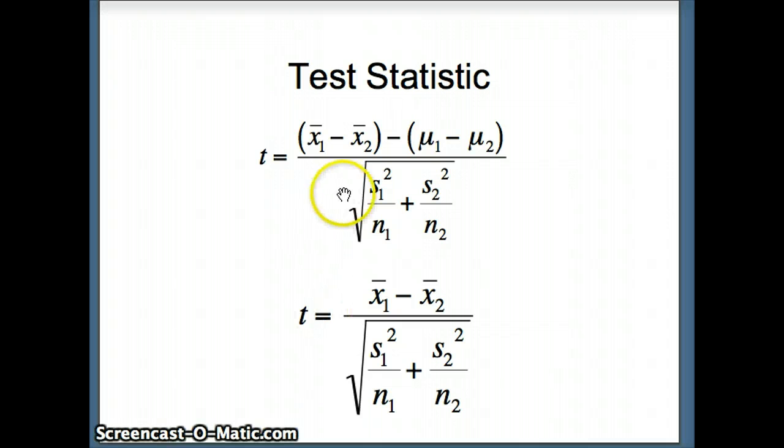Here's our test statistic: x1 bar minus x2 bar minus mu1 minus mu2 over root s1 squared over n1 plus s2 squared over n2. Except that's not the one we typically use because H0 is usually mu1 equals mu2, and if that's the case, mu1 minus mu2 is zero. This test statistic reduces to the one on the slide. That's the standard version we will use.